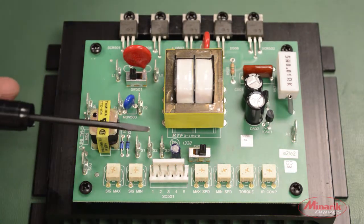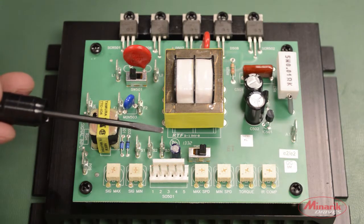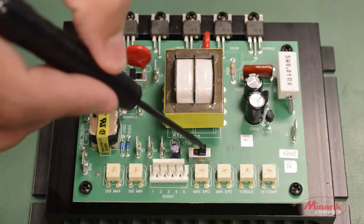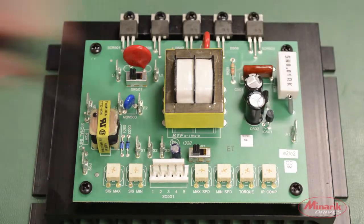Then, looking at SW502, the output voltage switch, the factory default set is for 180, but we'll be using a 90 volt motor, so we'll switch it to 90.